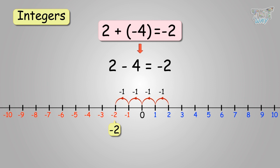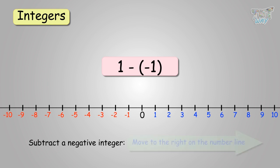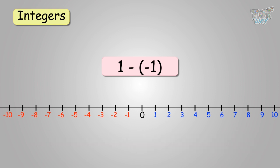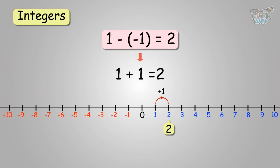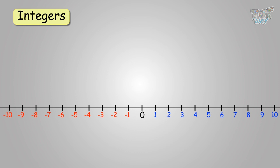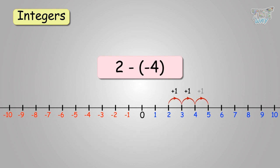Now, let's subtract a negative integer from a positive integer. Let's subtract negative 1 from 1. Remember, when you have to subtract a negative integer, you move towards the right. So, you will move one place towards the right of 1. The answer will be 2. 1 minus negative 1 equals 2. Subtracting a negative integer is the same as adding its inverse, so it's the same as 1 plus 1. Now, let's subtract negative 4 from 2. You start at 2, and then you move 4 to the right: 2 to 3, 3 to 4, 4 to 5, 5 to 6. 2 minus negative 4 is 6.